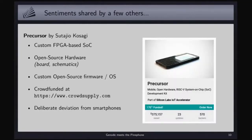One prominent example is the Precursor project by Bunny — for me it's a kind of extreme approach to a mobile phone that takes open hardware and open software to an extreme. The hardware is based on a custom SoC built in an FPGA and the software is completely developed from scratch. The device is deliberately a deviation from smartphones, more comparable to a feature phone, which is a deliberate decision of these developers.